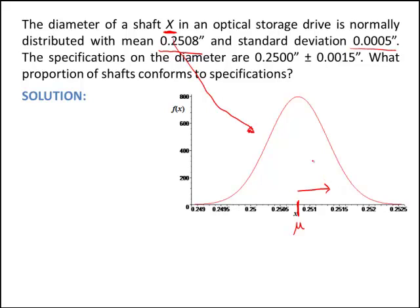There are specifications given on the diameter of this shaft. They are 0.2500 inches plus or minus 0.0015 inches. So for a shaft's diameter to meet specifications, it must be between the upper specification limit — taking 0.2500 plus 0.0015 — and the lower specification limit, which is 0.2500 minus 0.0015, giving us 0.2485. Shafts between the lower and upper specification will conform.